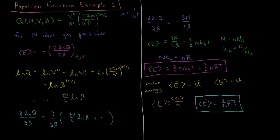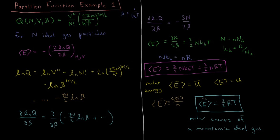That's a famous relationship in physical chemistry: the molar energy of a monatomic ideal gas — a single-atom ideal gas particle — is 3/2 times the gas constant times temperature per mole of substance. We see this fall out very naturally from the partition function once we use the appropriate derivative relationships to derive our physical properties.